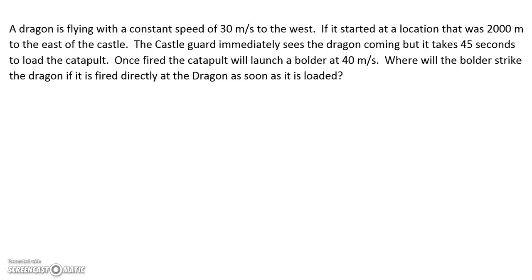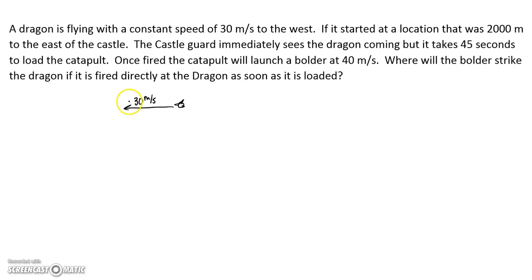First things first, I like to always draw myself a little sketch. So we've got a dragon flying with a constant speed — 30 meters per second. I'm going to draw a dragon. Check that dragon out! I did good. And he's flying at 30 meters per second to the west. West is left, so that'll be negative somehow.